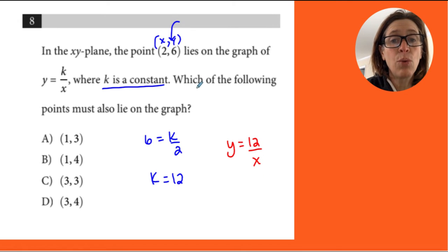So it's asking now, which of the following points must also lie on the graph? Well, I'm just going to plug them in and see if they make it true. So if I plug in the first one, 3 equals 12 over 1. That's not true.